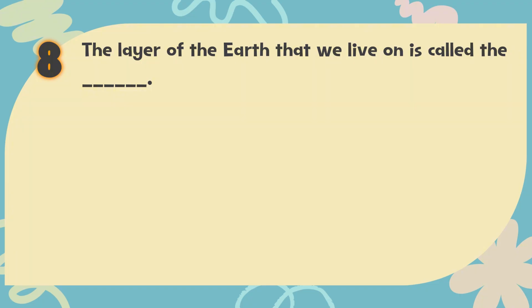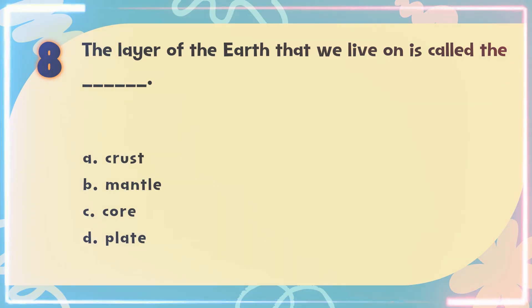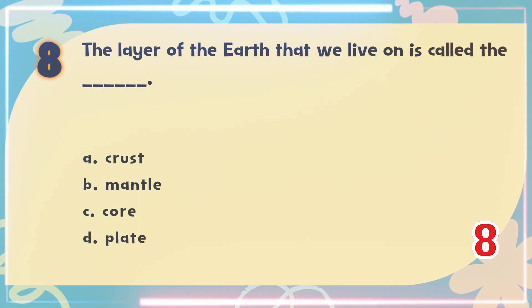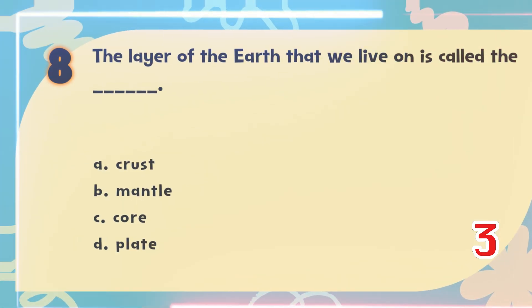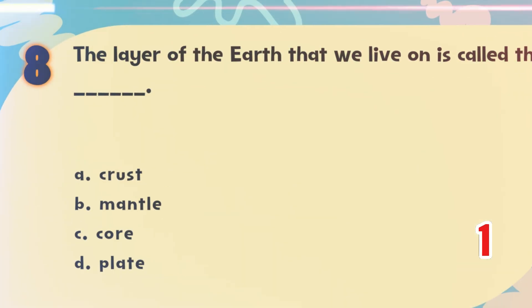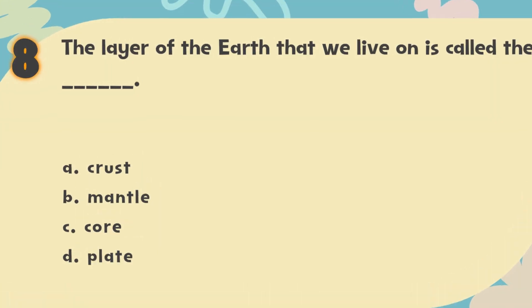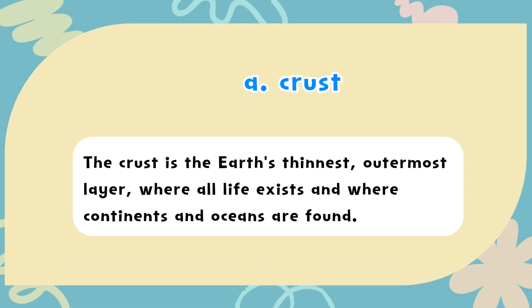Number 8. The layer of the earth that we live on is called the blank. The choices are: A. Crust, B. Mantle, C. Core, D. Plate. The correct answer is A. Crust. The crust is the earth's thinnest, outermost layer, where all life exists and where continents and oceans are found.